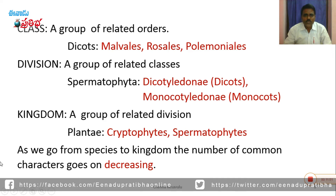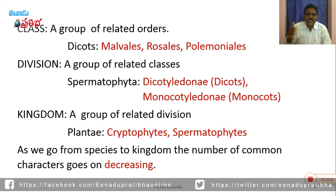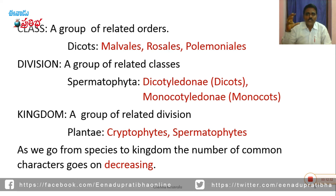The hierarchy runs: kingdom, division, class, order, family, genus, and species. As we go from species to kingdom, the number of common characters goes on decreasing.